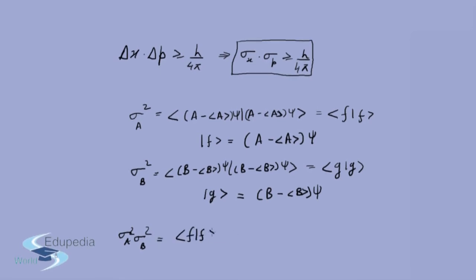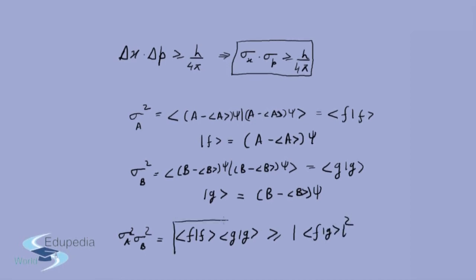We know that sigma A squared times sigma B squared equals ⟨F|F⟩⟨G|G⟩. Now I'm going to use something called the Schwartz inequality. This tells us that for any two vectors F and G, the product of their norms is greater than or equal to the modulus of the inner product ⟨F|G⟩. This is a purely mathematical relation — a standard mathematical theorem — which I won't prove here.